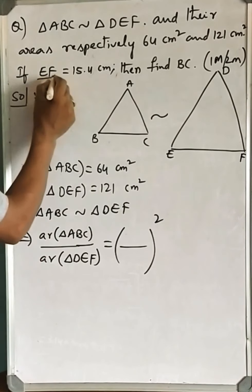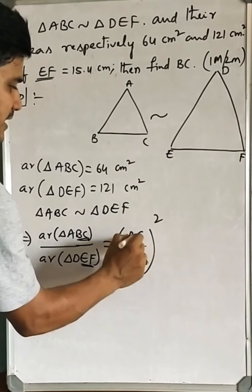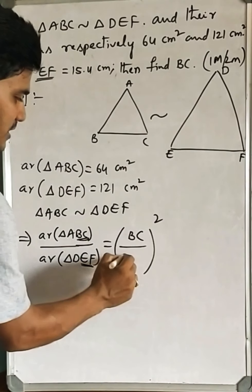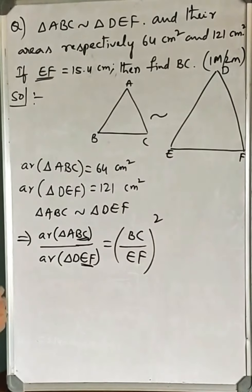In the problem, you can see EF is given. So what is its corresponding side? BC. So we have to take the ratio of these two corresponding sides: BC by EF, whole square.